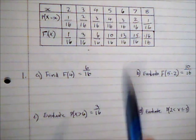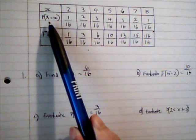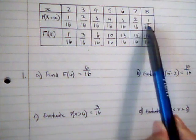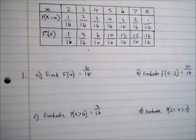Alternatively what I could do is I could just look at the probability distribution row here and I could just say well it's these two I'm interested in, so I can just add 2/16ths and 1/16ths.